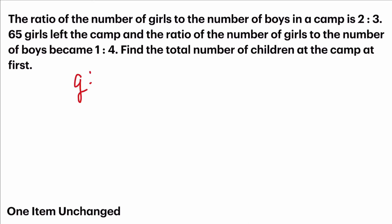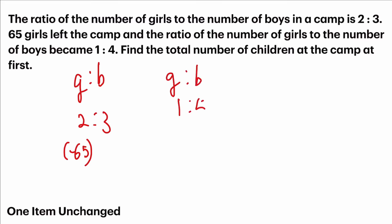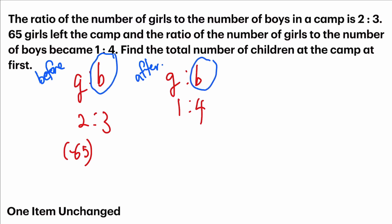The ratio of the number of girls to the number of boys in a camp is 2 is to 3. 65 girls left the camp, and the ratio of the number of girls to the number of boys became 1 is to 4. This is before, and this is after. The item that is unchanged is the number of boys. But the boys' ratio is 3 before and 4 after, so we need to change it to an equivalent ratio. The common multiple of 3 and 4 is 12.